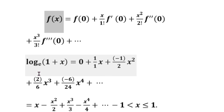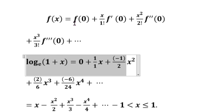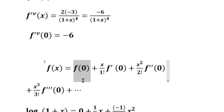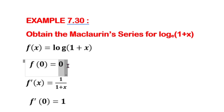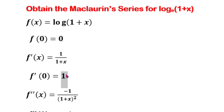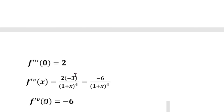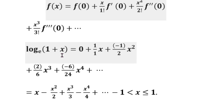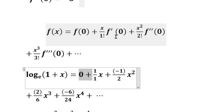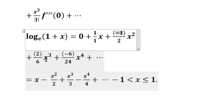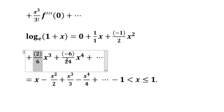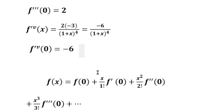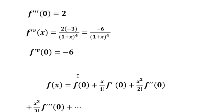Now applying the Maclaurin series formula: f of x equals f of 0 plus x by 1 factorial times f dash of 0 plus ... Here f of 0 is 0, and f dash of 0 is 1.